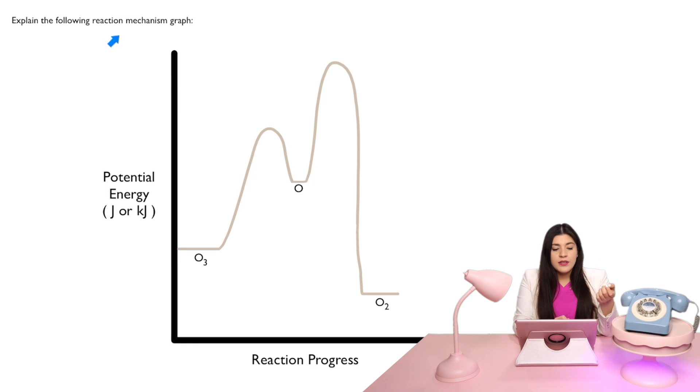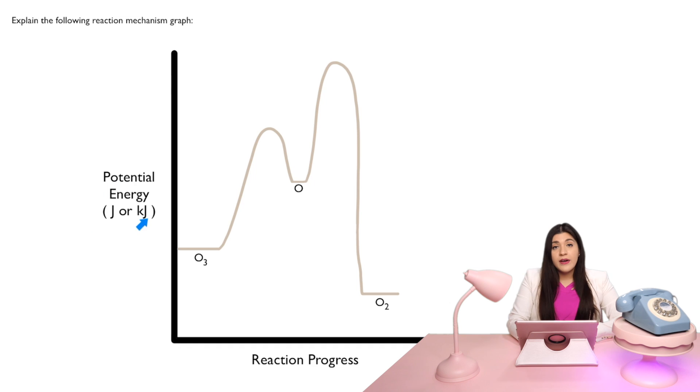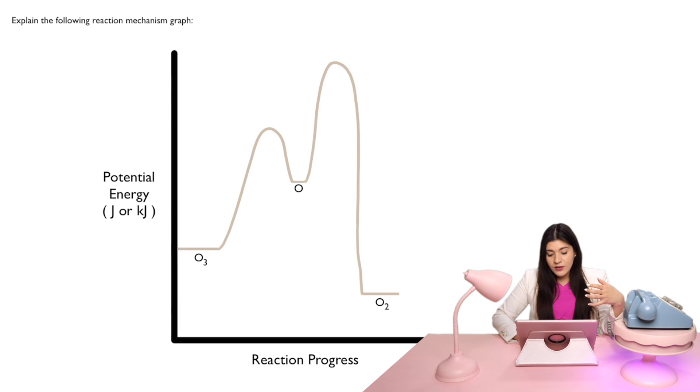What we're looking at with this reaction mechanism or energy diagram is on the y-axis, we're going to see some sort of energy. So potential energy is typically the case and that's either measured in joules or kilojoules. And then here on our x-axis, we're specifically looking at how the reaction is progressing.